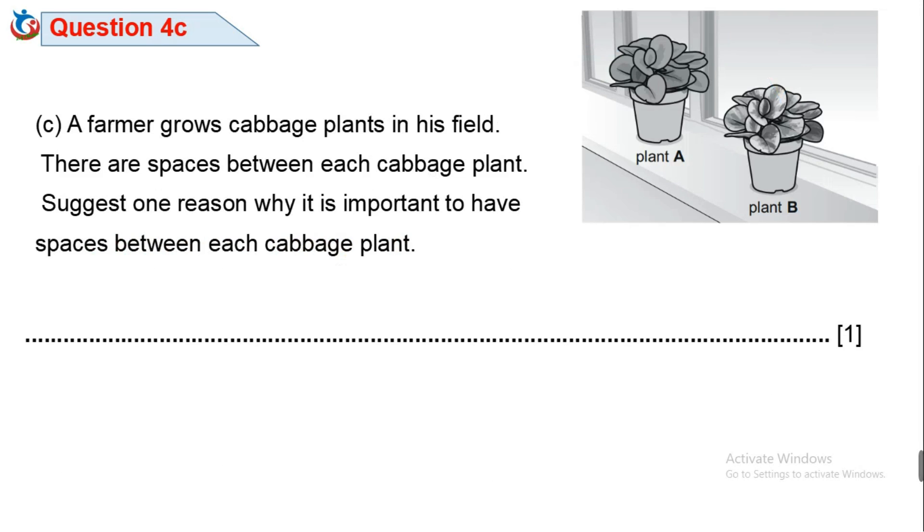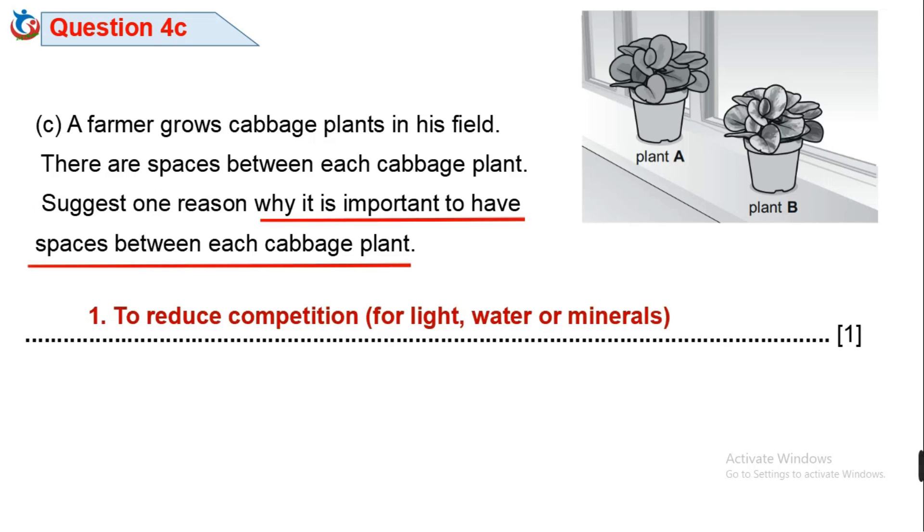Question 4C. A farmer grows cabbage plants in his field, there are spaces between each cabbage plant. Suggest one reason why it is important to have spaces between each cabbage plant. It is important to have spaces between each cabbage plant mainly to reduce competition for light, water or minerals. So aside, there is other importance of spacing in plants include to reduce overcrowding, to prevent spread of disease or pests, to have more space to grow. All these are correct.